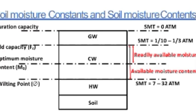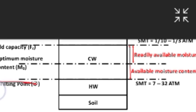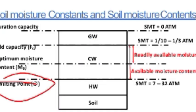Soil Moisture Constants and Soil Moisture Contents: Looking at the phase diagram, we can see hygroscopic water, capillary water, and ground water. The wilting point is shown on the diagram. Capillary water holds in the roots. Saturated water is the excess water. After the action of gravity, water flows through. Roots do not absorb this water; soil particles hold the water.